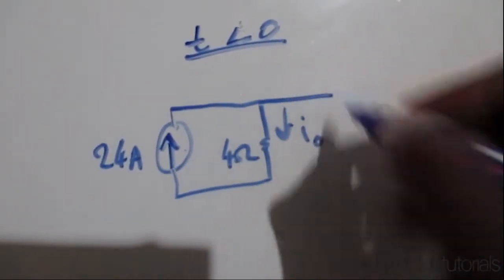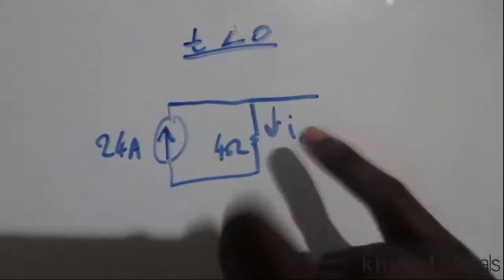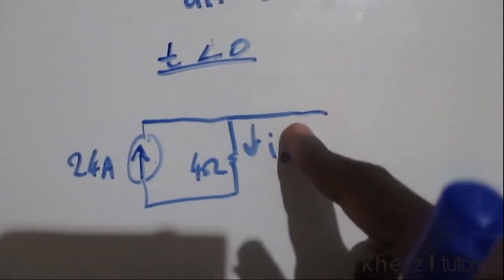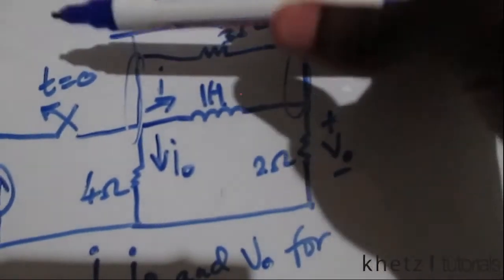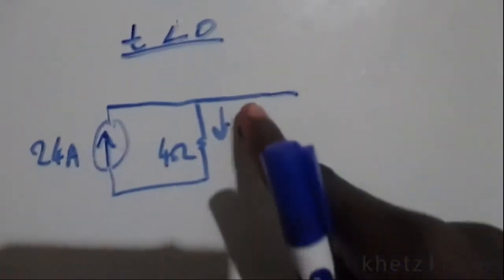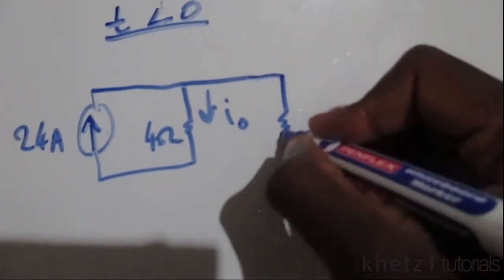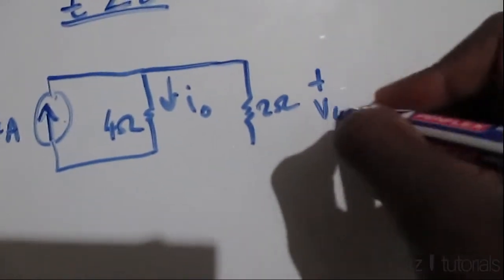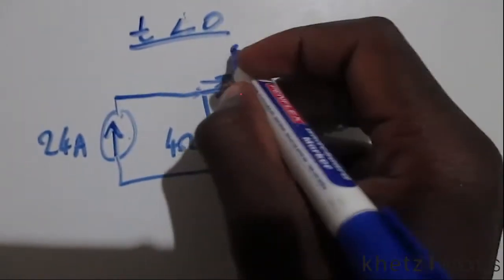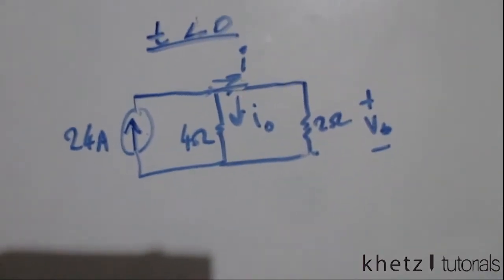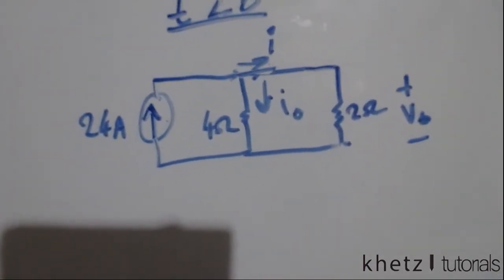Since we have an independent source and an inductor, the inductor is going to become a short circuit. A short circuit in parallel with a resistive value results in a short circuit. So we have a short circuit there, two ohms with v_o indicated across it, and i indicated in the circuit. This is our circuit for time less than zero.